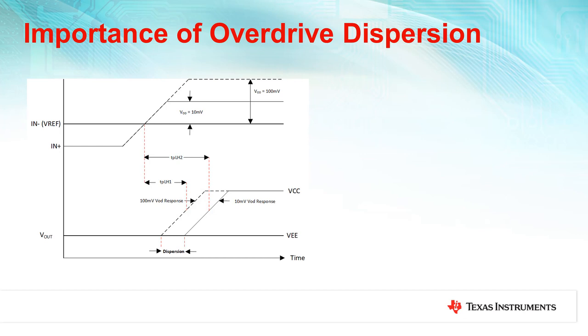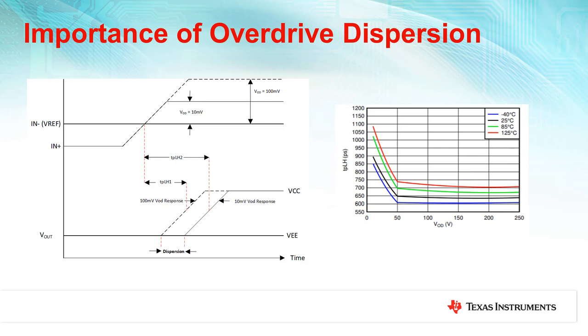One more important spec to pay attention to when using a comparator in the receiver path is input overdrive dispersion. Input overdrive refers to how much the input signal to the comparator exceeds its threshold or reference voltage value, and dispersion is defined as the amount of propagation delay variance over a certain range of input overdrives.